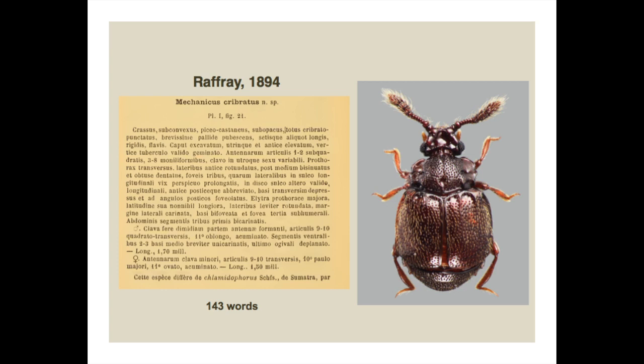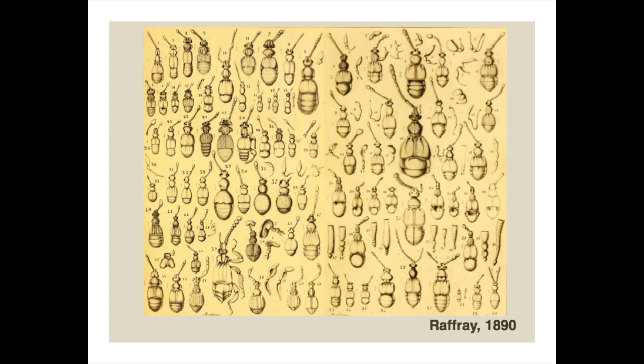People appreciated that verbal descriptions were kind of lacking, so they started to increase their length and also to include illustrations. Raffray, writing in 1894 about a beetle called Mechanica, was up to 143 words, which gives quite a good picture of what the beetle looks like — but still not good enough. Raffray, who was actually pretty good at drawing, would include really beautiful illustrations of the beetles he was describing. His study of salaphine rove beetles from 1890 is one of my favorite pen-and-ink images.